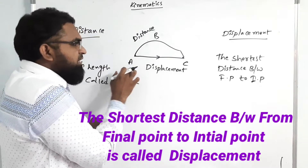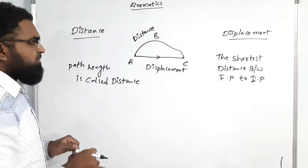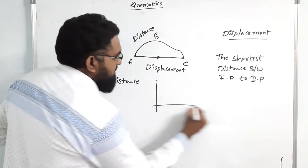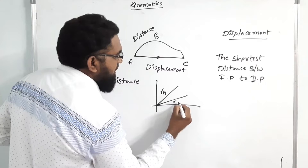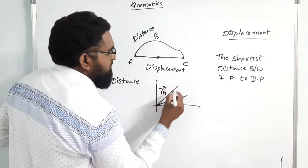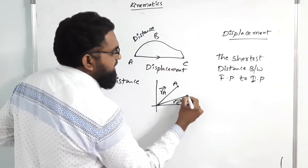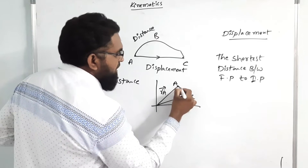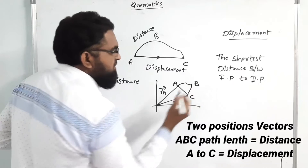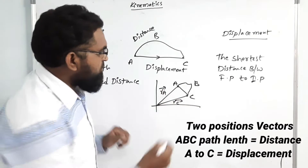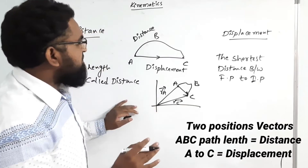Next, for distance and displacement, see here there are two position vectors: R_A and R_C. Here is point A and here is point C. So A to C via A, B, C is the distance, and A to C directly is the displacement. I hope you understood this.